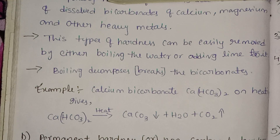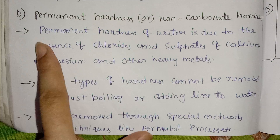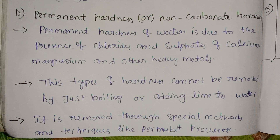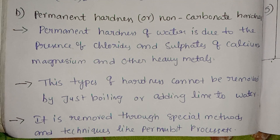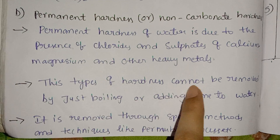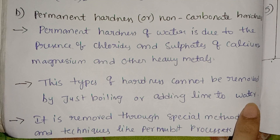Now we have permanent hardness, also called non-carbonate hardness. Permanent hardness of water is due to the presence of chlorides and sulfates of calcium, magnesium, and other heavy metals. This type of hardness cannot be removed by just boiling or adding lime to the water.